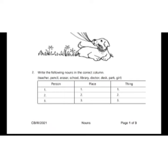So we are going to fill up in the three columns. Teacher is the name of a person so we will write teacher in the column of person. Pencil is the name of a thing so we will write pencil in the column of thing.